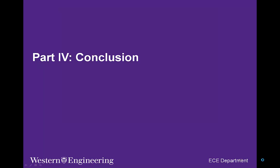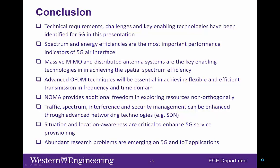Let me briefly summarize the presentation. In this presentation, we have discussed the technical requirements, challenges, key enabling technologies, and emerging research topics for 5G. Some of the conclusions include: spectrum and energy efficiencies are the most important performance indicators of 5G air interface design; massive MIMO and distributed antenna systems are key enabling technologies in achieving spatial spectrum efficiency; advanced OFDM techniques will be essential in achieving flexible and efficient transmission in frequency and time domain; NOMA provides additional freedom in exploring resources non-orthogonally; and traffic, spectrum, interference, and security management can be enhanced through advanced networking technologies like SDN.